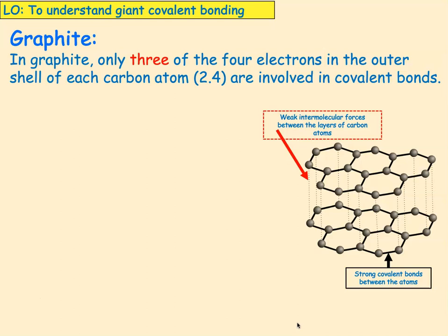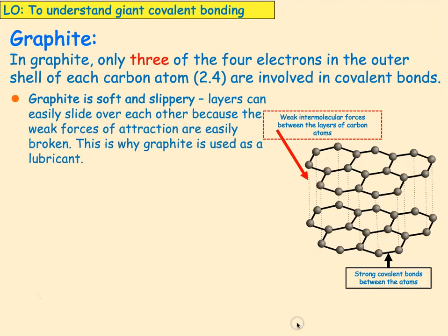In graphite, only three of the four electrons in the outer shell of each carbon atom are involved — only three — and the other one leaves a delocalised electron. Graphite is soft and slippery because it has lots of layers, and those layers can slide over each other. There is a weak force of attraction between the layers and you can easily slide them over each other — that's why graphite is used as a lubricant.